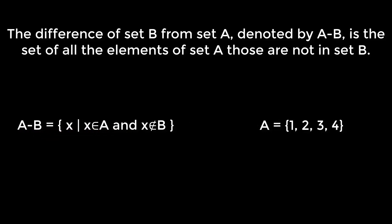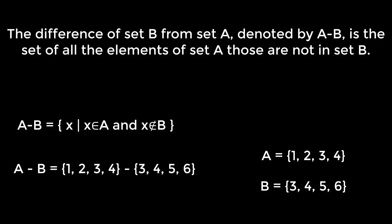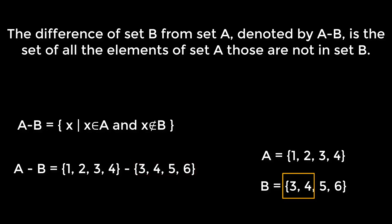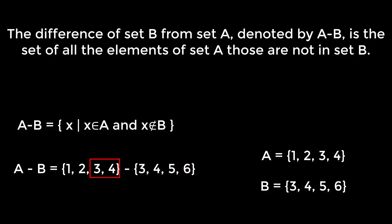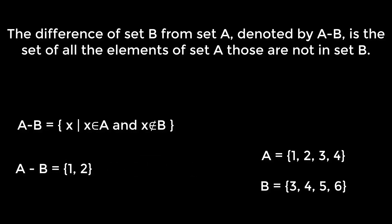Suppose A is the set {1, 2, 3, 4} and B is the set {3, 4, 5, 6}. Then A difference B is the set {1, 2, 3, 4} difference the set {3, 4, 5, 6}. The elements which are in B will be removed from set A. Here, 3 and 4 of set A are also in set B, therefore these two will be removed, and A difference B is the set {1, 2}.